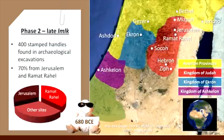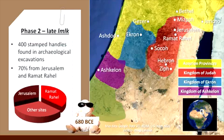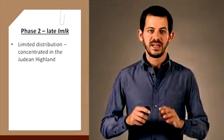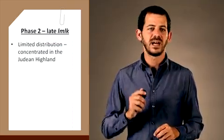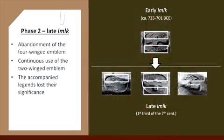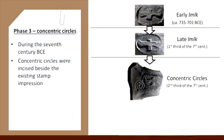The distribution of 400 stamped handles found in archaeological excavations clearly shows the importance of Jerusalem and Ramat Rahel as the main centers of the system, with more than 70% of the total assemblage. The limited distribution of the handles and its concentration at the highlands is in clear analogy to the historical background of the period. This is when Judah was recovering from the Assyrian campaign, and most of the fertile lowland and trade routes were out of reach.